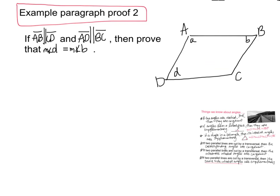It says: if AB is parallel to CD — I'm going to go ahead and mark that, this line is parallel to this line — and AD is parallel to BC, then prove that the measure of angle D is equal to the measure of angle B. I'm going to use this information and see if I can string some conditional statements together to get to this conclusion.